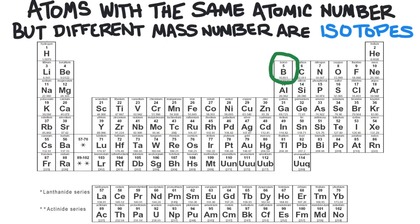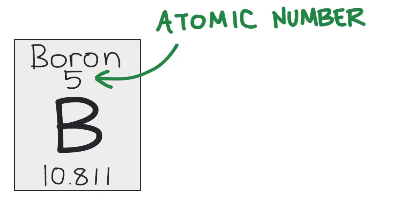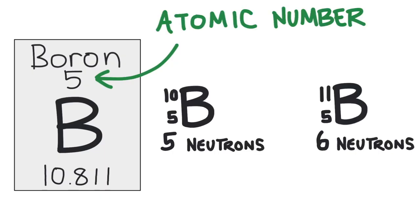For example, boron has two isotopes, that is it has two kinds of atoms. Both kinds have five protons, that's the atomic number of boron, and then one has five neutrons while the other has six neutrons. The mass numbers of boron are 10 AMU and 11 AMU.